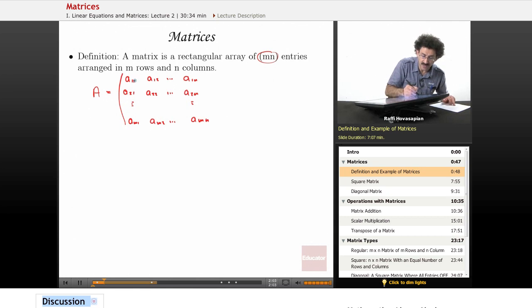So the top left entry is A₁₁, bottom right entry is Aₘₙ. This is an m by n matrix. This m is the rows. The rows always come first. This is the row.